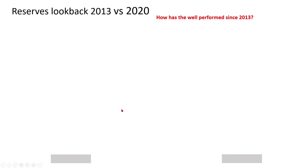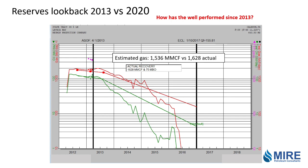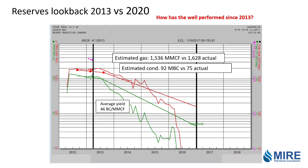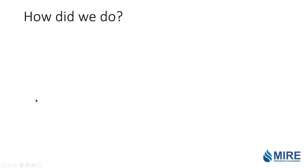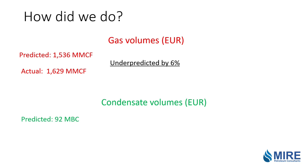Let's see how we did — how has the well performed since 2013? Here's the actual production data with our projection. Our gas projection really wasn't that bad; it's somewhat close. The well is off production, so we know its ultimate recovery because it's finished producing. We had estimated 1,536 MMcf ultimate gas, but the well actually did a little better. For the condensate, we came in under the estimate of 92,000 barrels because the average yield was 46, more in line with our original volumetric estimate. On gas volumes, we predicted 1,536; actual was 1,629 — we underpredicted by about 6%. On condensate, we predicted 92,000 barrels; actual was 75,000 — we overpredicted condensate reserves by 18%.